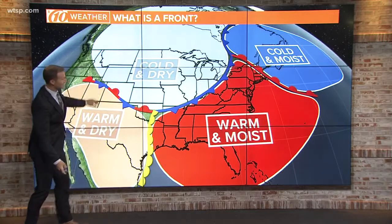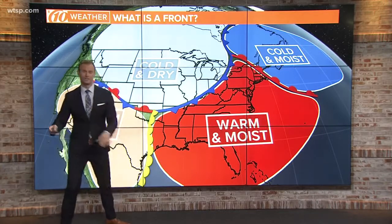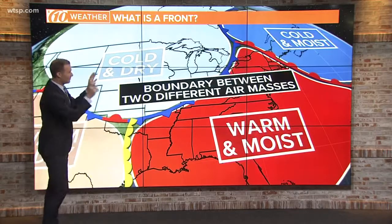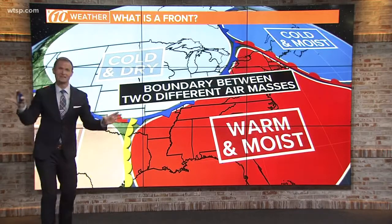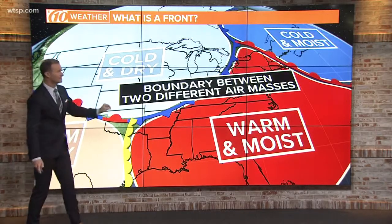Cold fronts, stationary fronts, dry lines and warm fronts — even some occluded fronts get mixed in there as well. So the basic definition of a front: it is the boundary between two different air masses. But here's the really cool part — all of these boundaries have different impacts on the atmosphere.